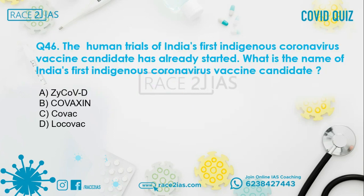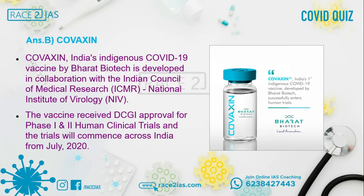Question number 46: The human trials of India's first indigenous coronavirus vaccine candidate have already started. What is its name? Option A: Psycho-D. Option B: Covaxin. Option C: Covac. Option D: Locovac. The right answer is Option B, Covaxin. Covaxin, India's indigenous COVID-19 vaccine by Bharat Biotech, is developed in collaboration with ICMR and the National Institute of Virology. The vaccine received DCGI approval for phase 1 and phase 2 human clinical trials commencing across India from July 2020.